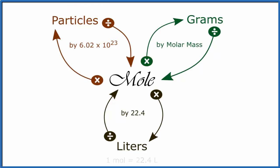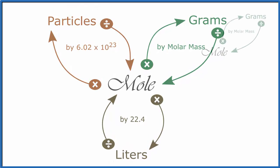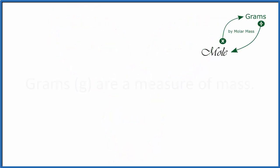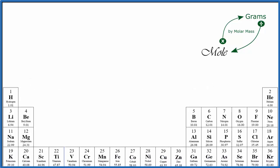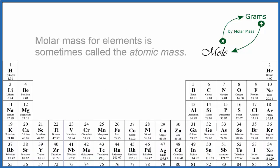All right, on to moles to grams and grams to moles conversion. When we're dealing with grams, we're dealing with mass, and we're dealing with the mass of these different elements on the periodic table. To convert from moles to grams and grams to moles, we have to figure out the molar mass.